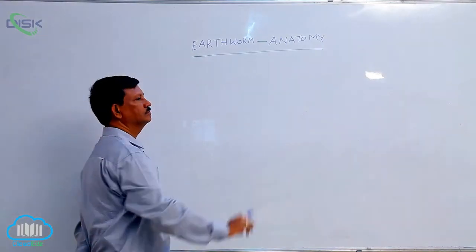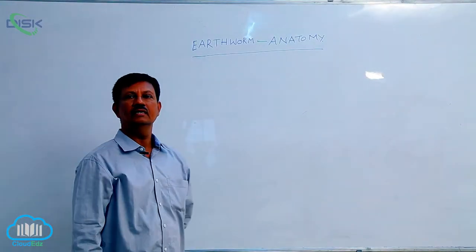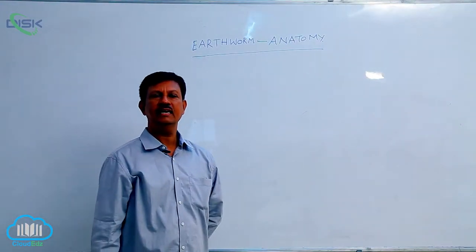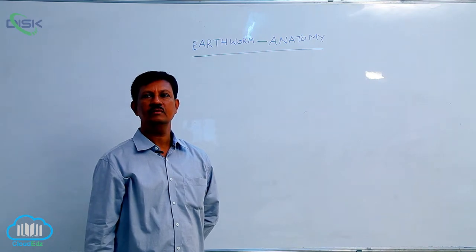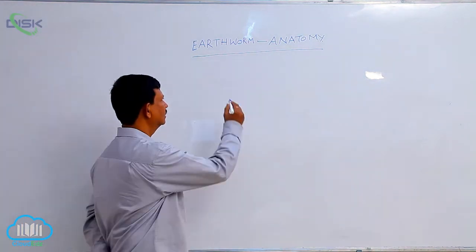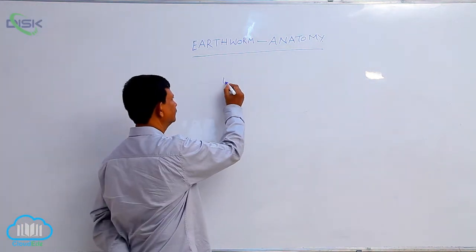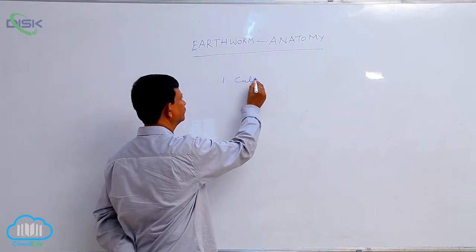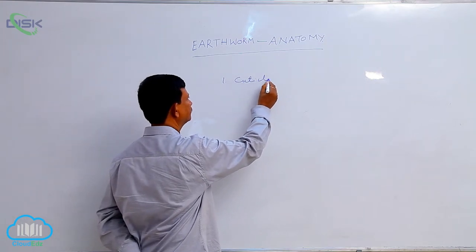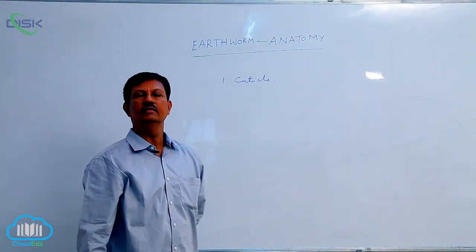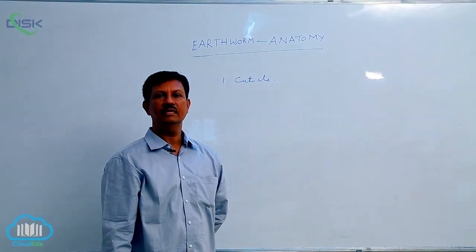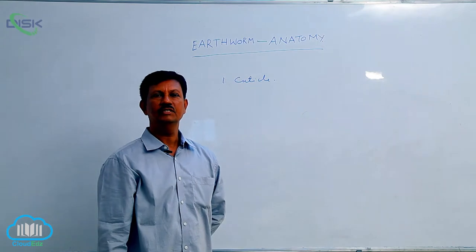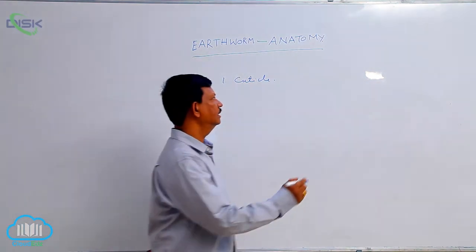Earthworm Anatomy. If you can see the anatomy of the earthworm, the following structures are present in the earthworm. The earthworm body is externally covered by a thin noncellular layer, which is known as the cuticle.